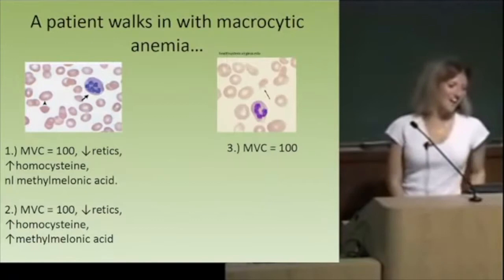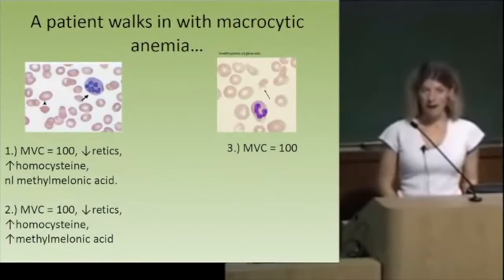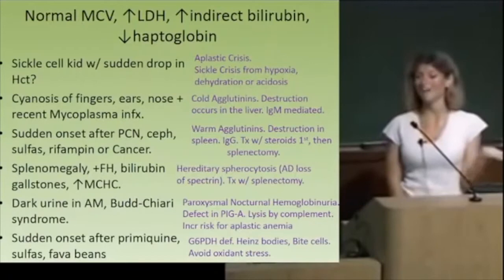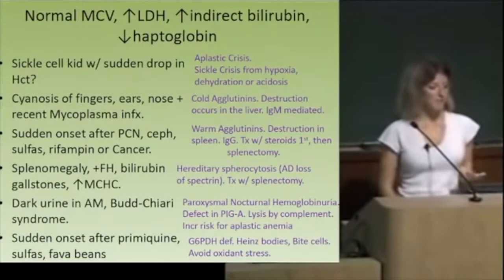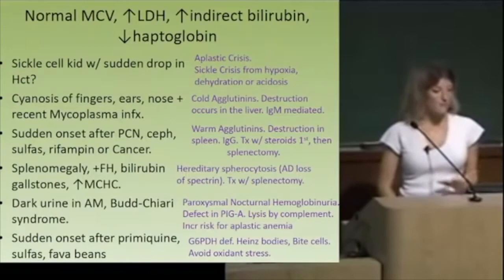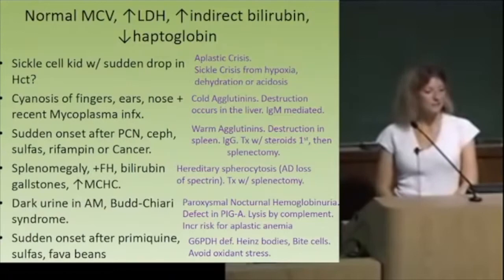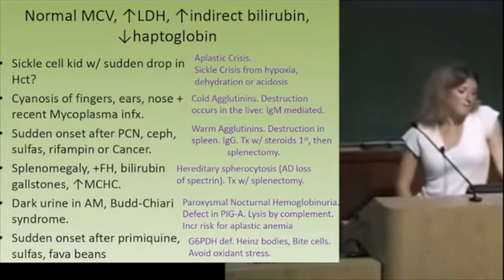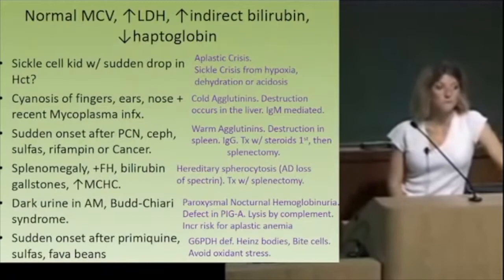What if the MCV is normal, but LDH is high, indirect bilirubin is high, and haptoglobin is low? That's hemolysis — these are all cases of hemolytic anemia. A sickle cell kid with a sudden drop in hematocrit is an aplastic crisis or sickle crisis, caused by hypoxia, dehydration, or acidosis. If you have cyanosis of the fingers, ears, and nose, and maybe a walking pneumonia — cold agglutinins — destruction of blood cells is due to IgM immunoglobulins. If there's sudden onset of hemolytic anemia after taking drugs like penicillin, cephalosporins, or sulfas — warm agglutinins.